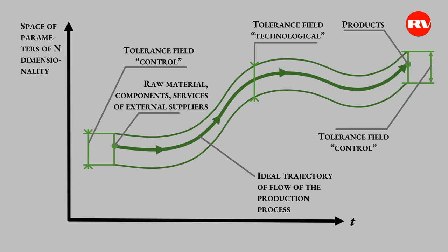But the production process is always a process that includes many technologies, and its building is always the selection of technologies, their interconnection — that is, the assembly of the production process from technologies.